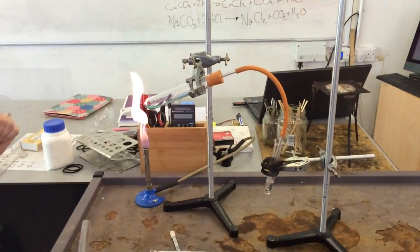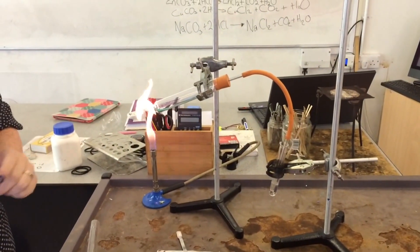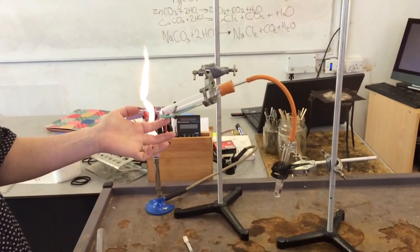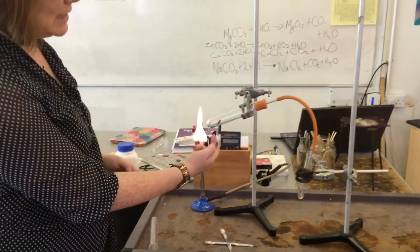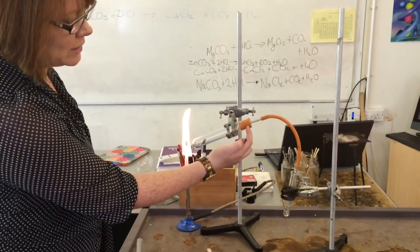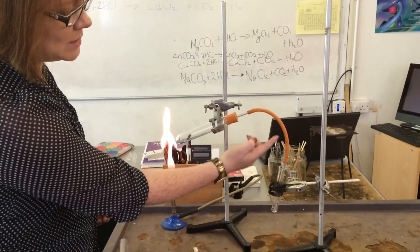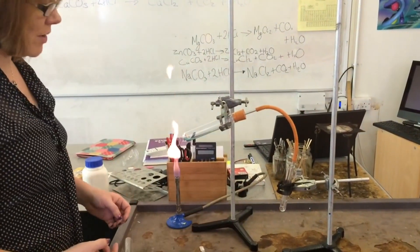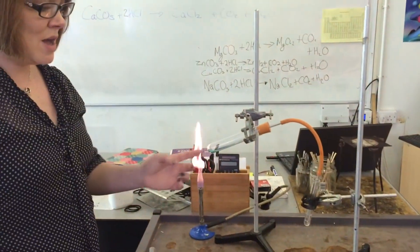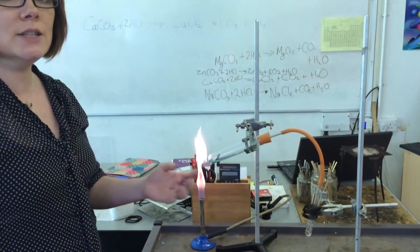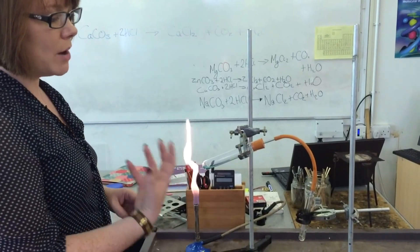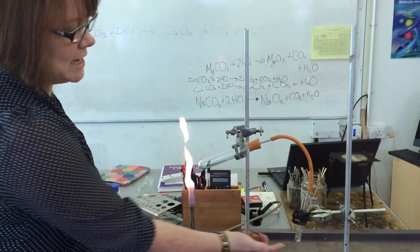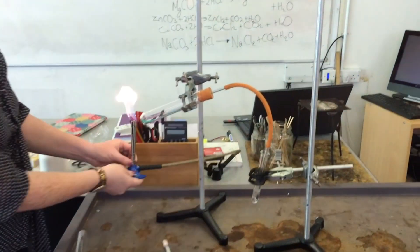Here is the setup where we're going to be looking at the thermal decomposition of metal carbonates. In here I have some copper carbonate in a boiling tube, clicked into a delivery tube, and the end of the delivery tube is going into some lime water. I'm going to heat this quite strongly — I want you to be looking for the colour change in the tube and the colour change in the lime water.